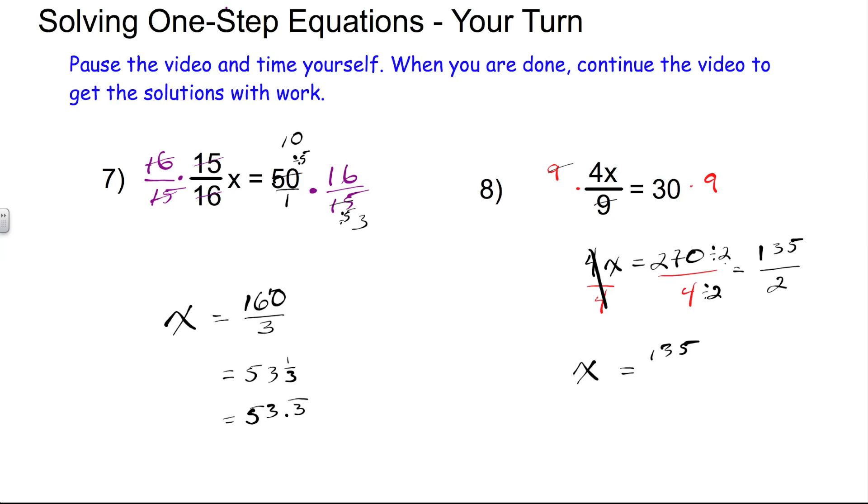So that could be our answer, 135 over 2, or changing that to a mixed number. 2 goes into 13 6 times, with 1 left over. 2 goes into 15 7 times, with 1 left over. So that would be 67 and a half, or 67.5.